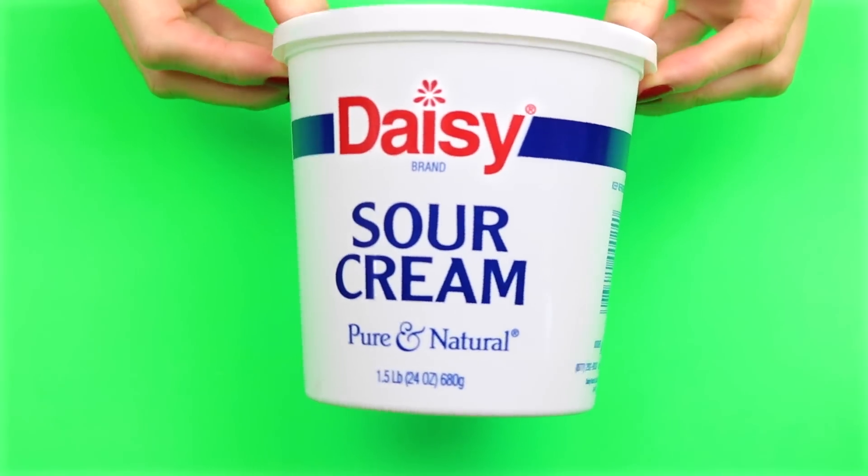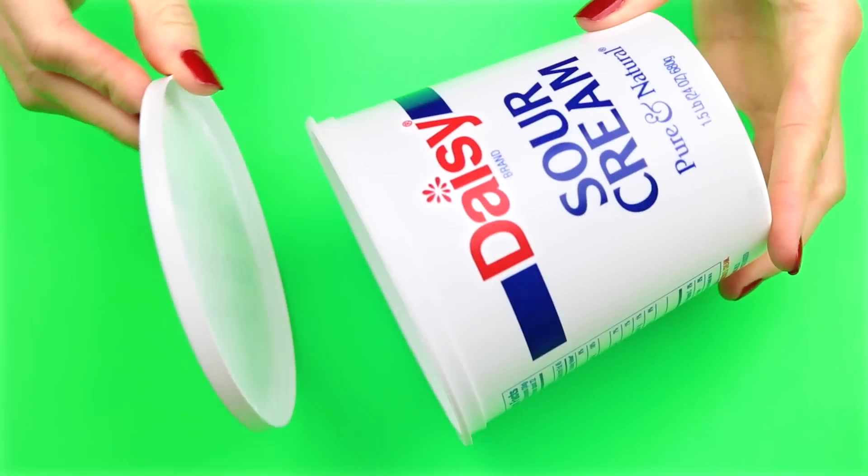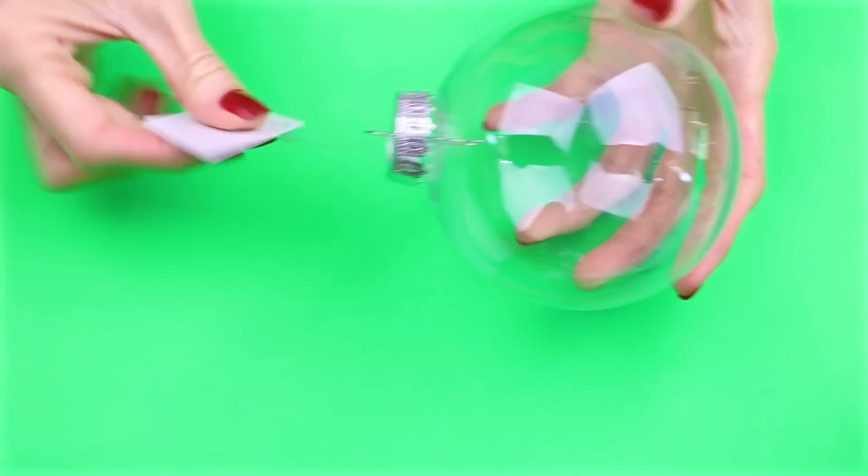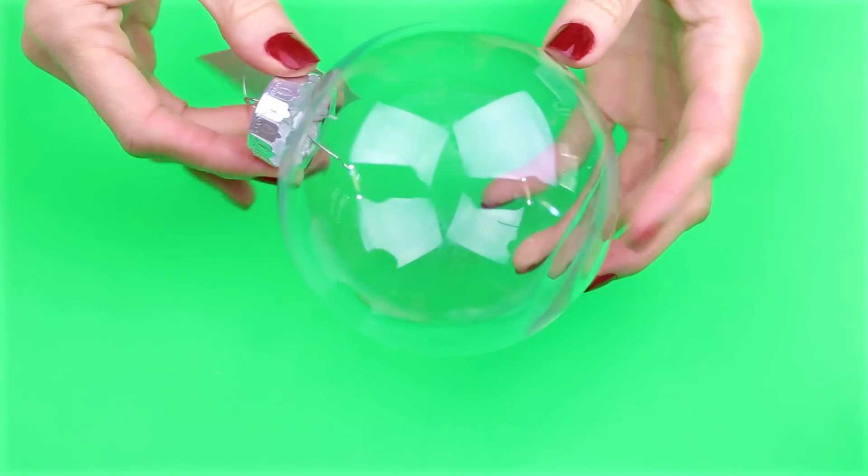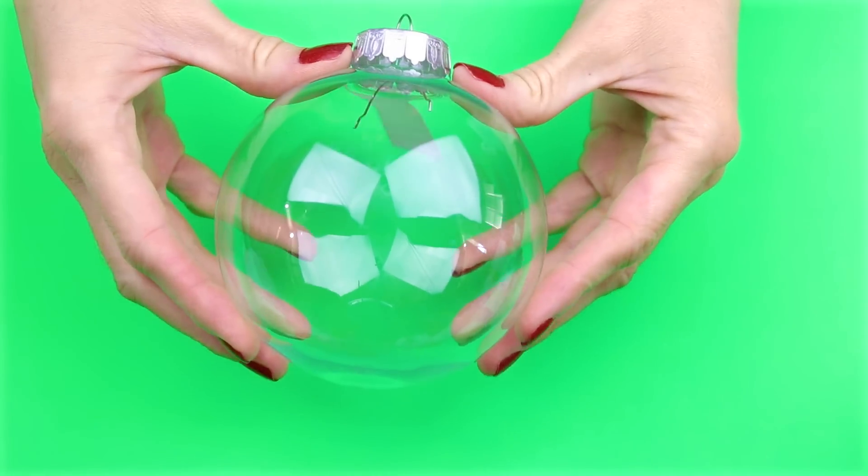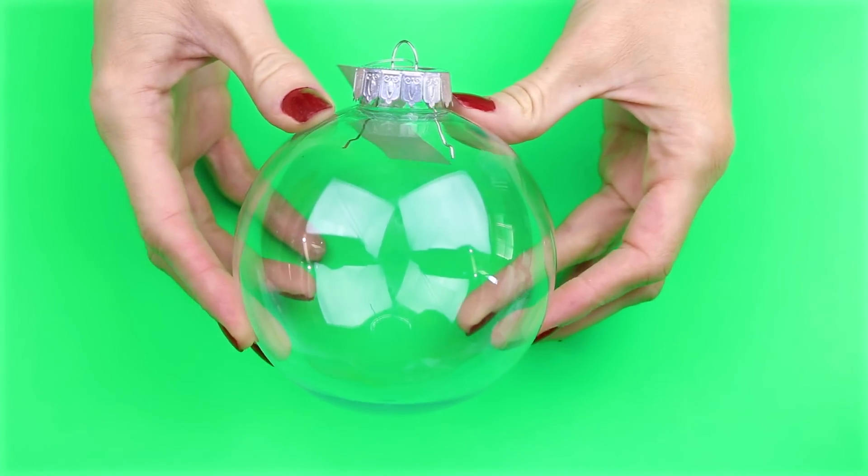To start, I'm going to recycle this sour cream container and I just washed it out really good. I'm going to use one of these plastic Christmas tree ornaments. Other things that you can use for the top are a water bottle or a soap bottle, just make sure that they're thoroughly washed and cleaned out.